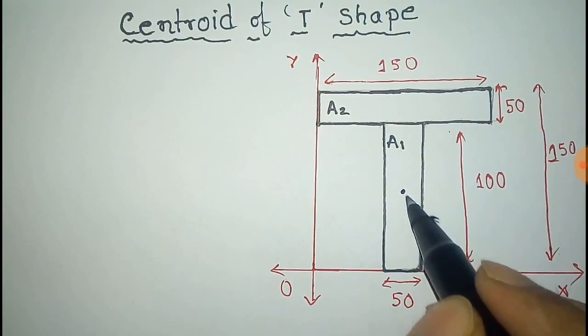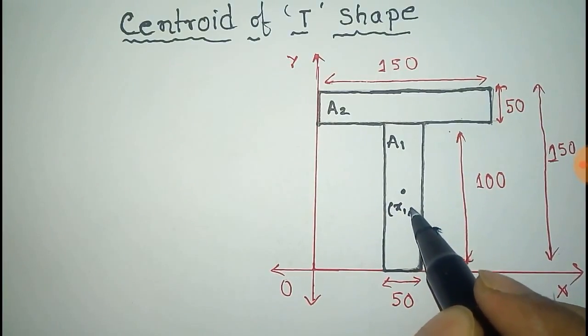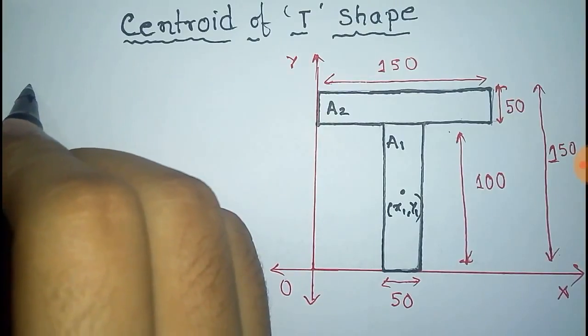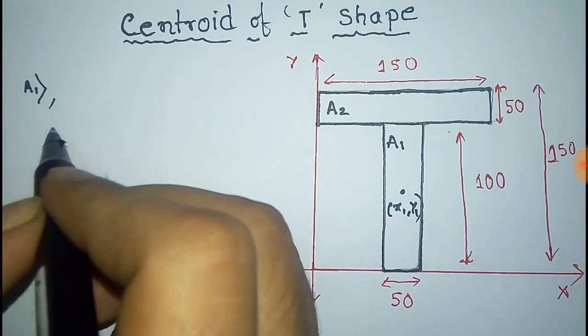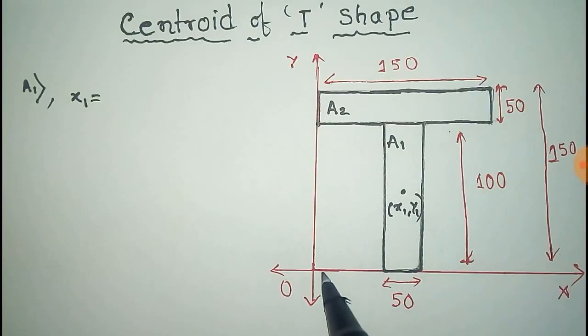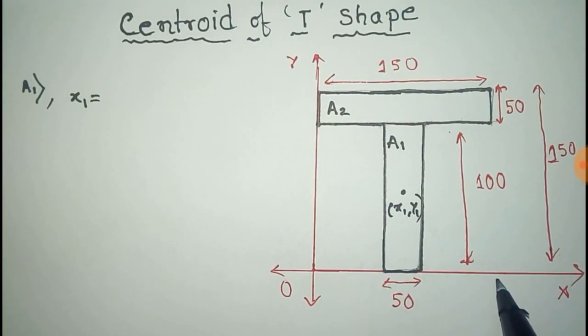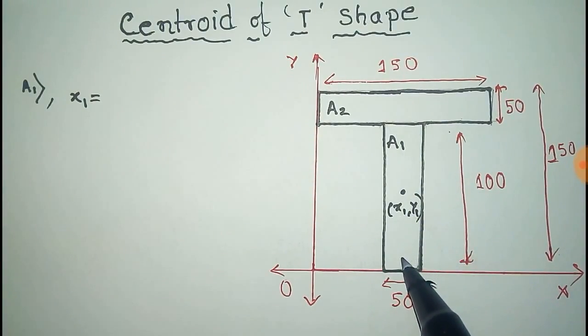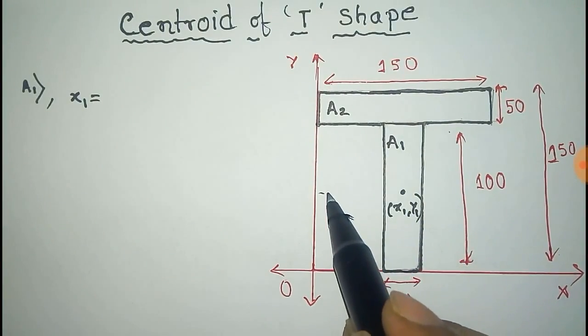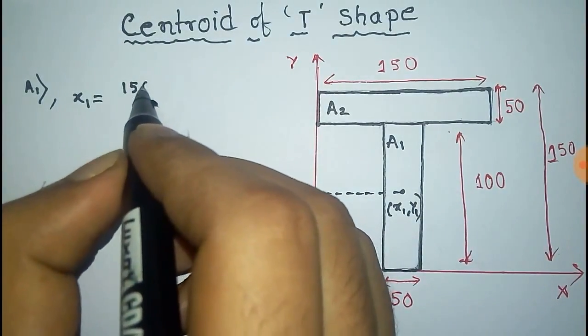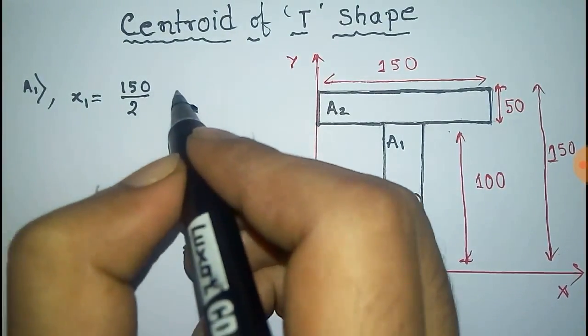This is the intersection of the diagonals of this rectangle. For A1, x1 is half of the total length - 150 by 2. This distance, because this point is the intersection point of the diagonals of the rectangle, is 150 by 2, which equals 75.